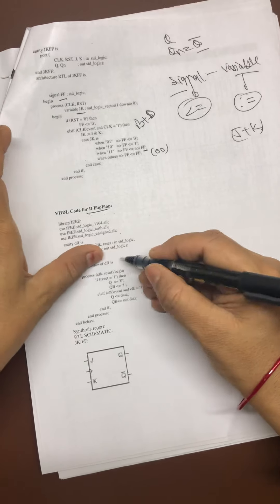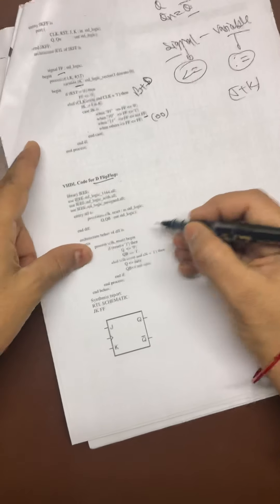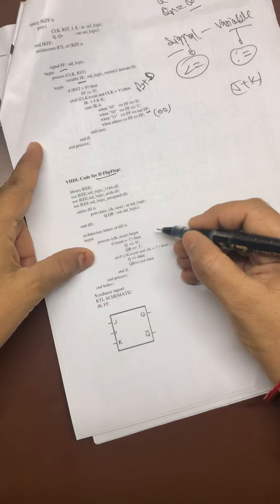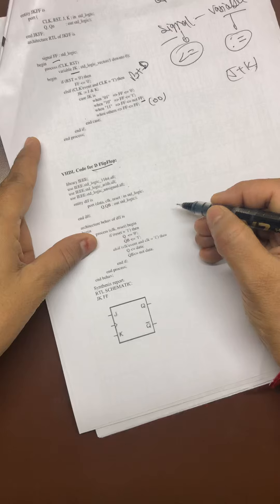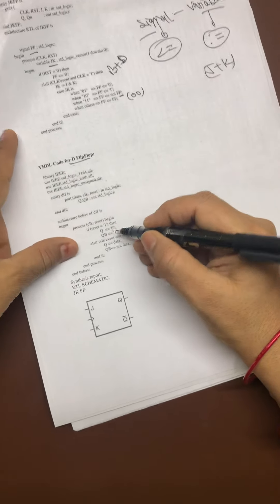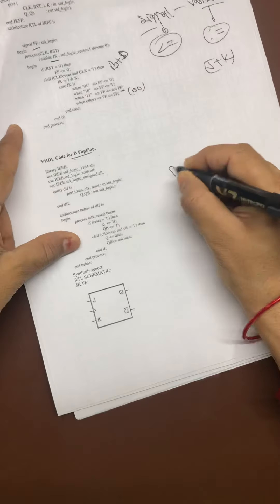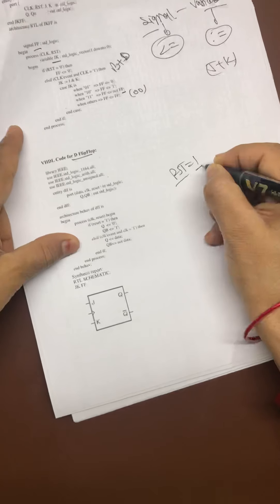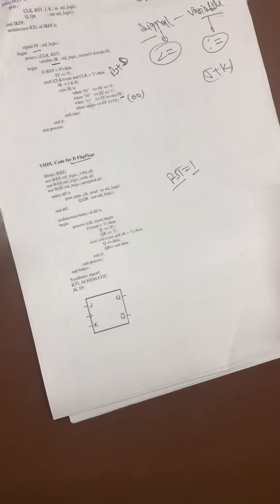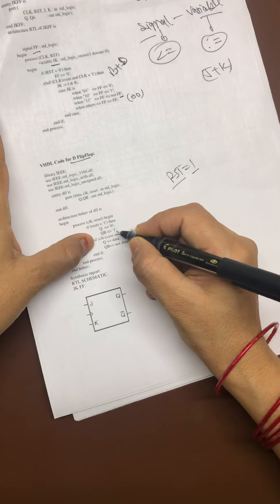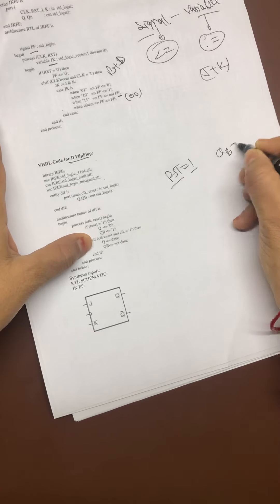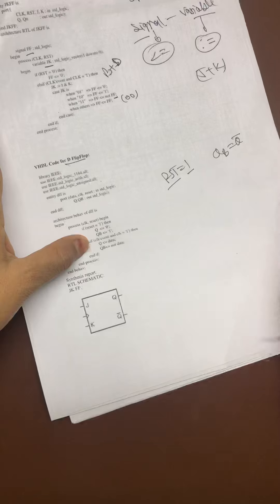Architecture, architecture name of DFF is process. I am including the clock and reset. Begin. If my clock is 1—sorry, if the reset is 1. Reset 1 means what this statement is telling? Reset 1 means my system need to be halt. So what I am doing? Q0 and QB. QB is my considered to be Q bar, so that is going to be 1.